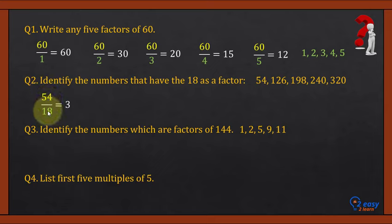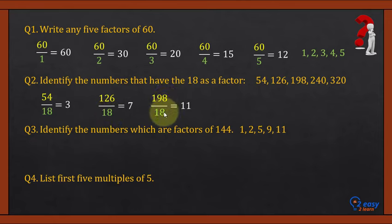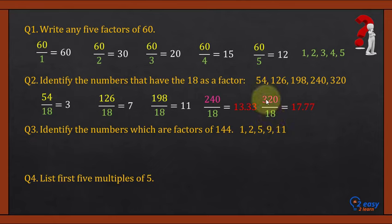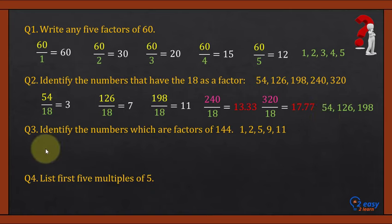Question 2: Identify which numbers have 18 as a factor. 126 divided by 18 gives integer answer 7, so 18 is a factor of 126. 198 divided by 18 gives integer answer 11, so 18 is also a factor of 198. 240 divided by 18 gives a decimal answer, so 18 is not a factor of 240. 320 divided by 18 is also decimal, so 18 is not a factor of 320. Therefore, the numbers 126 and 198 have 18 as a factor.